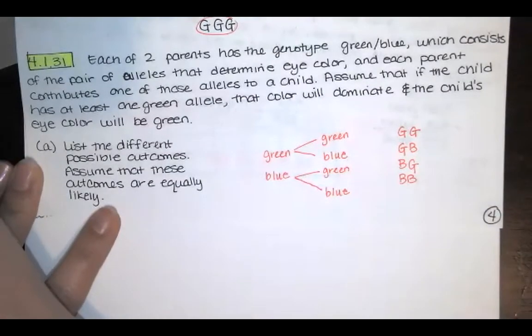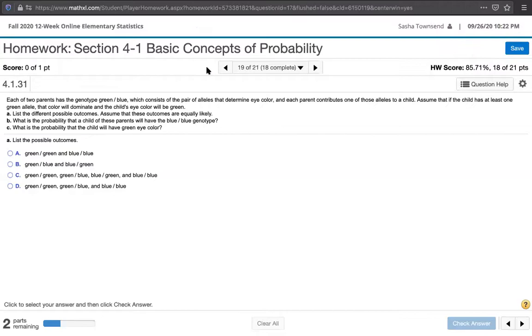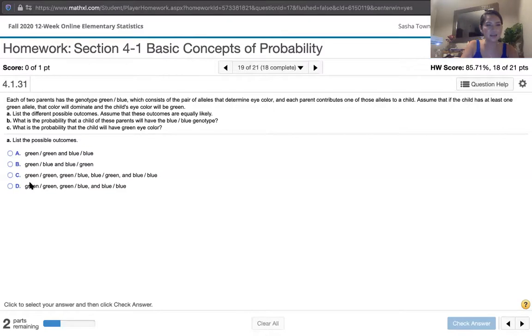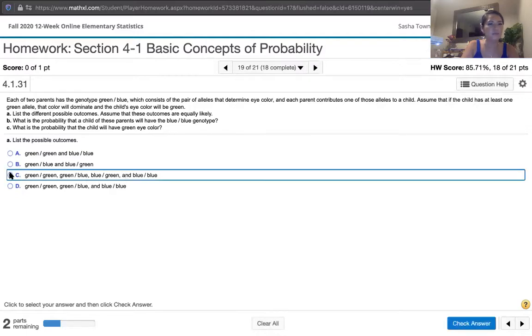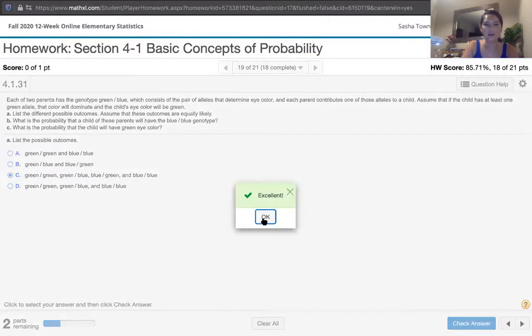So let's go back to the other screen. Let's look at that do homework web page. There we go. And it says list the possible outcomes and we've got green-green, green-blue, blue-green, and blue-blue. So that's C. And that's exactly what we want.